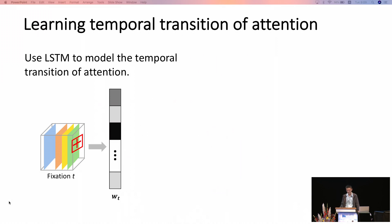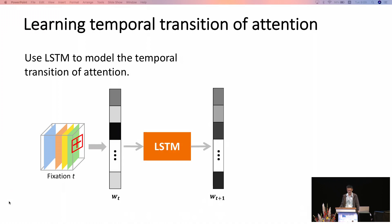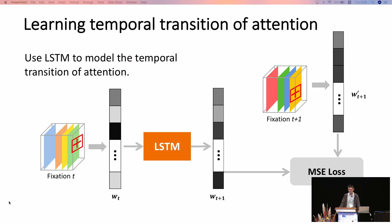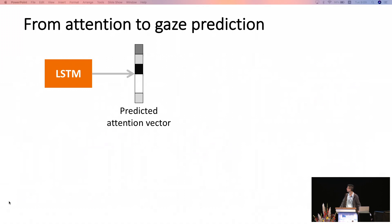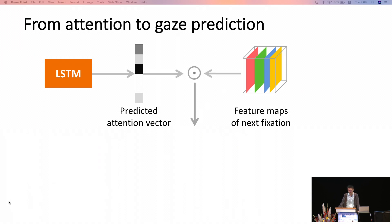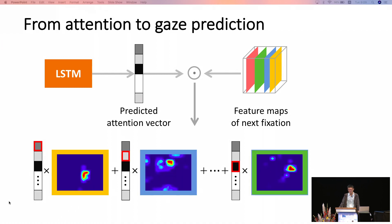For learning the temporal transition of attention, we use an LSTM since this attention transition process is not a Markov process. We train the LSTM using the ground truth gaze position: we crop and pool a similar vector from the next fixation using the ground truth gaze position, and train the LSTM using the ground truth weight vector. From this attention vector, we use channel-wise dot product to get the gaze position of the next fixation, producing a gaze heat map representing the prediction of gaze position at the next fixation.